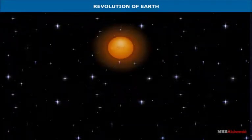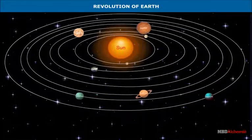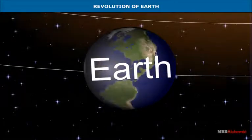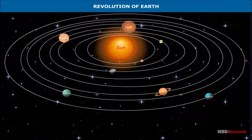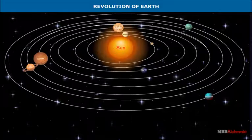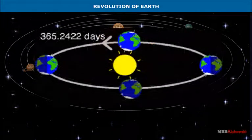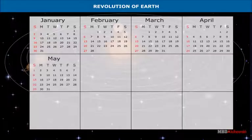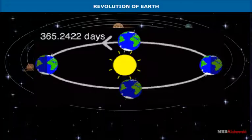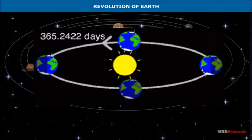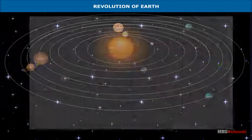Revolution of Earth: While rotating on its axis in an inclined position, the Earth also moves around the Sun. The movement of the planet like Earth around the Sun is known as revolution. The Earth completes one revolution in 365 days and six hours.